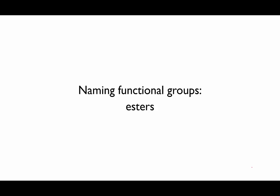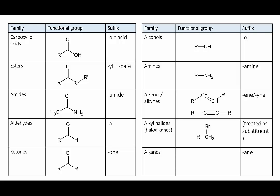In this video we'll look at naming esters. Esters are somewhat similar to carboxylic acids and amides. They have a carboxyl group - the C double bond O plus the extra oxygen. But where in carboxylic acids that extra oxygen is bonded to a hydrogen, here for esters the oxygen is bonded to a hydrocarbon group.